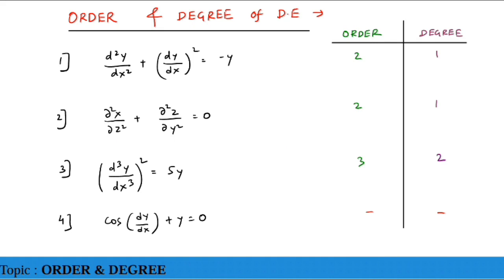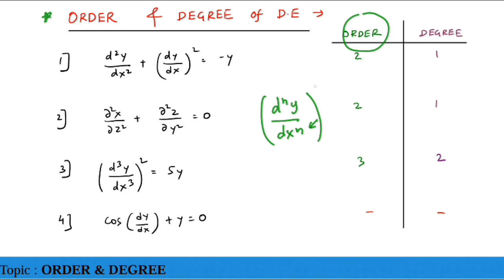Now we study order and degree — a very important concept because maximum GATE questions are asked on this. The order is determined by the term d^n y / dx^n where n is maximum in the equation. The degree is simply the power of that highest-order derivative term.